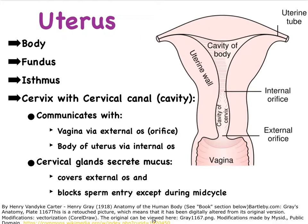That brings us to the uterus. The uterus is directly connected to the fallopian tubes, also called the oviducts or the uterine tubes. It is a hollow organ in which the fertilized zygote will tend to nestle and then develop into a baby. The main part is referred to as the body. This bump here is referred to as the fundus, similar to how we refer to the bump of the stomach as the fundus.